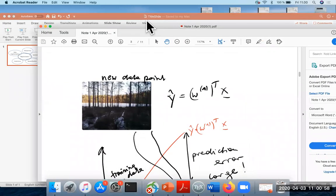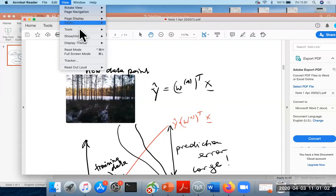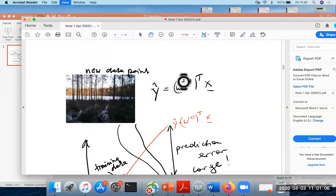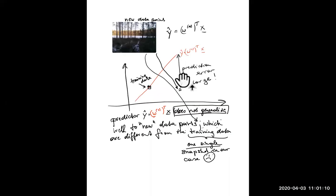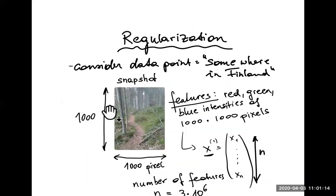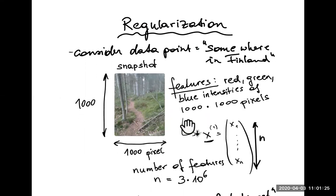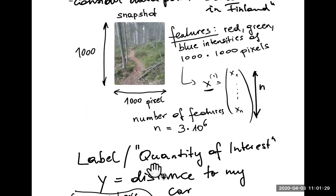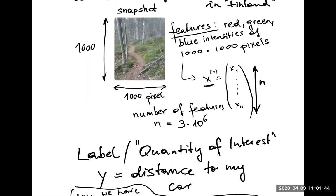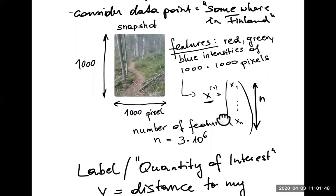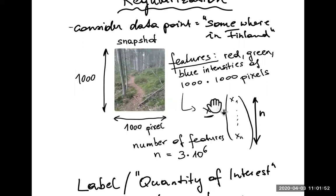Let's consider a particular application that we can model as a machine learning problem and where we might want to use regularization methods. Let's assume you go hiking — Finland has a lot of nature and trails — and at some point you might be interested in knowing the distance from your car. The data point could represent your current location somewhere in Finland, and the quantity of interest is the distance to your car, which is important to know if you have trouble getting back before dark.